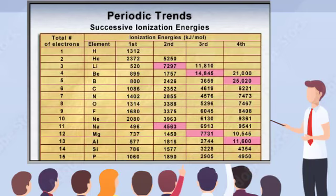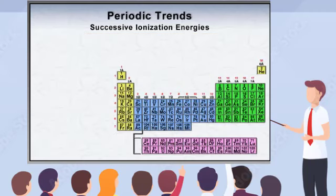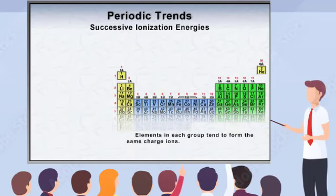The pattern observed for magnesium occurs for each atom past lithium. The large jump in ionization energy represents the difficulty of pulling electrons from the closed shell, disrupting the octet of the noble gas electron configuration. This explains why certain ions are more common in nature. Pulling more electrons from a stable noble gas configuration is simply not an energetically favorable event.